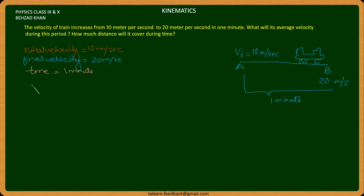What we need to know is average velocity. What is the formula? Initial velocity plus final velocity divided by 2. So we have this, 10 plus 20 divided by 2, 15 meters per second. This is our average velocity.